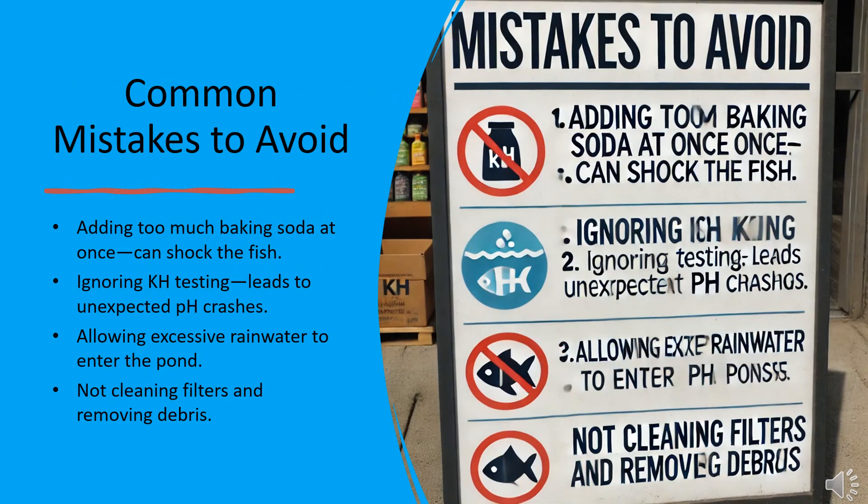While stabilizing your pond's pH, avoid common mistakes. Adding too much baking soda at once can shock your koi. Ignoring KH testing can lead to unexpected pH crashes. Excessive rainwater and neglected filter maintenance also contribute to pH instability.